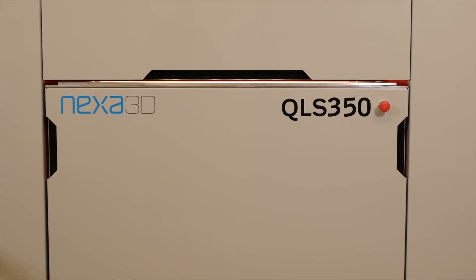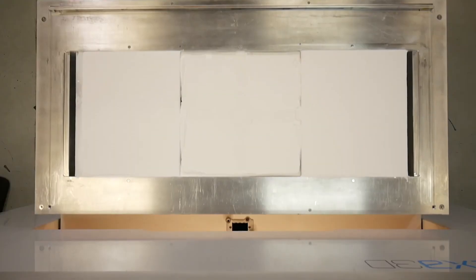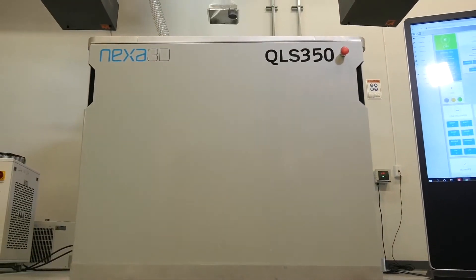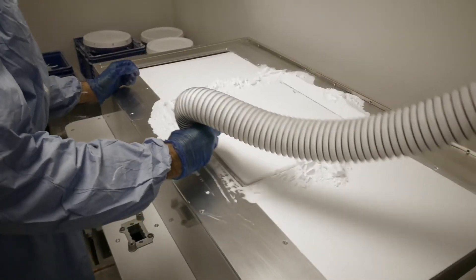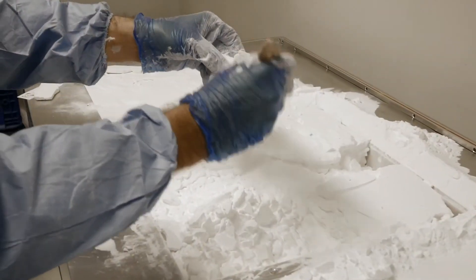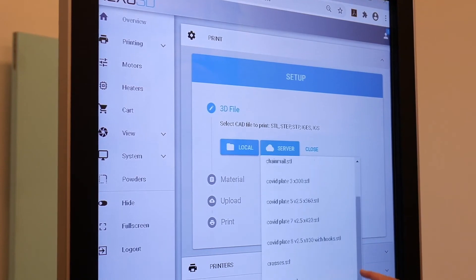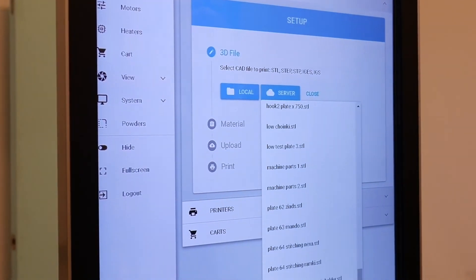High productivity comparable to injection molding is ensured with the QLS350's quad laser light engine and autonomous build card. Up to 3 full builds a day are possible, and can be processed by a single shift thanks to the unique architecture of the QLS350 and centralized factory management software.